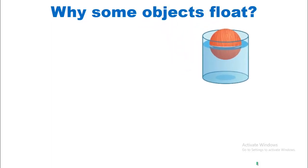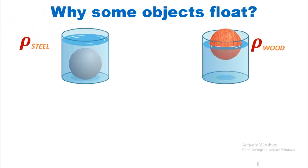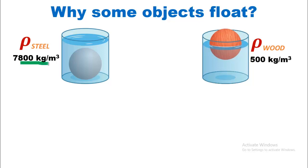Let's keep it simple and take the example of steel and wood. It is common observation that steel sinks in water whereas wood floats in water. Density plays an important role here. The density of steel is 7800 kg per cubic meter, and the density of wood is 500 kg per cubic meter.